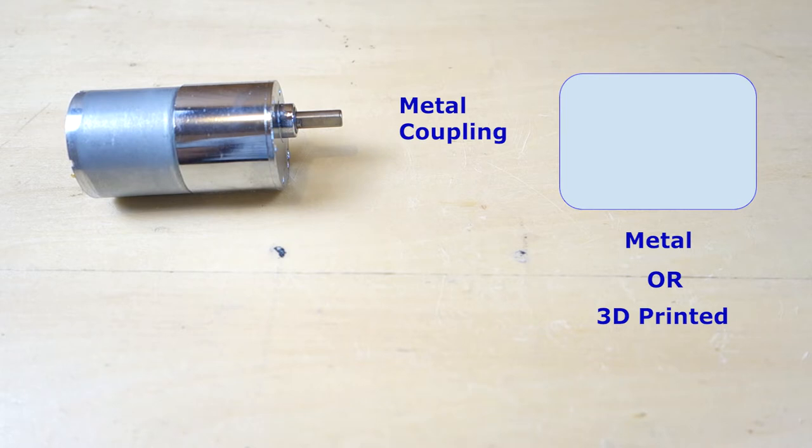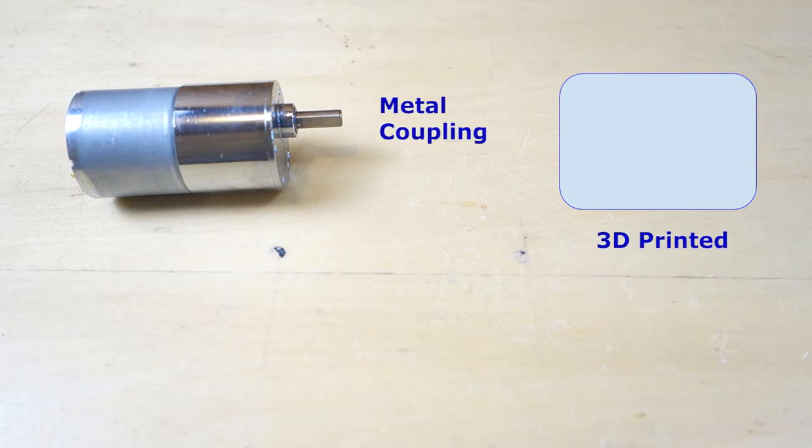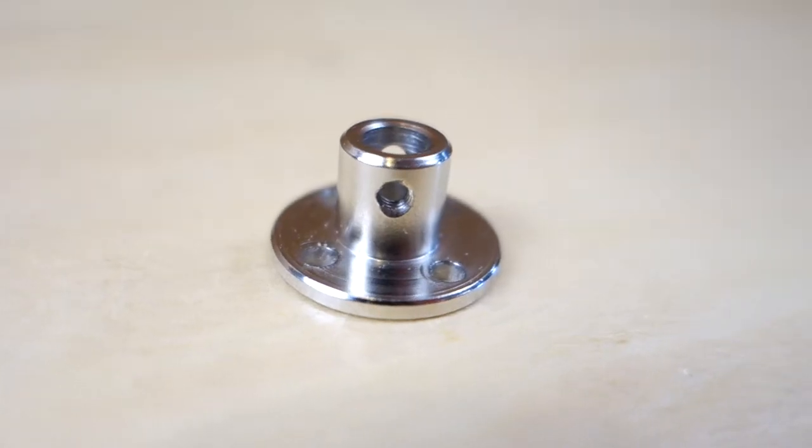Most likely the part on the right will be 3D printed plastic. So we will want to spread out the torque load as much as possible. This means we should go with the flange coupling. Let's select this flange coupling.